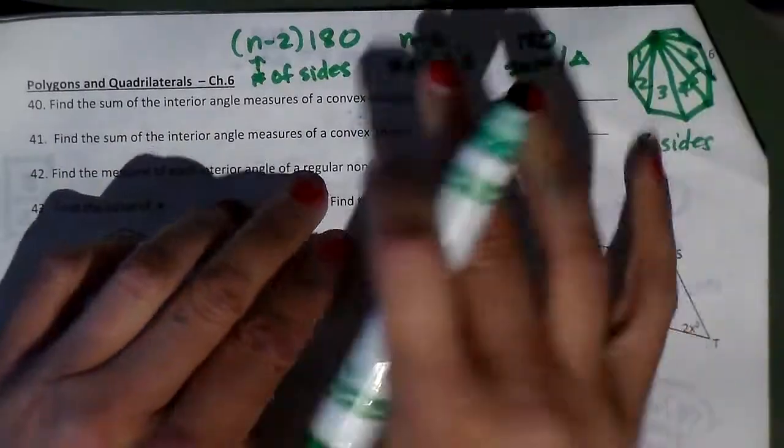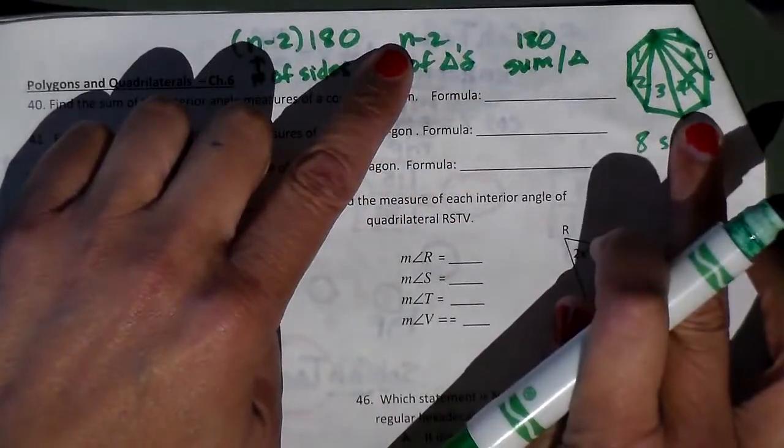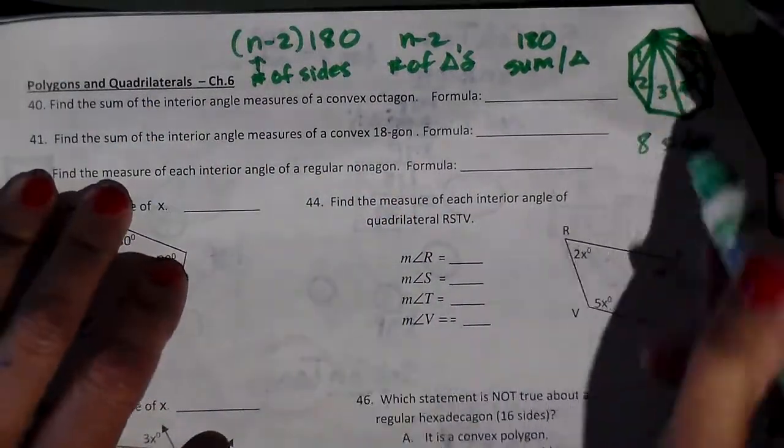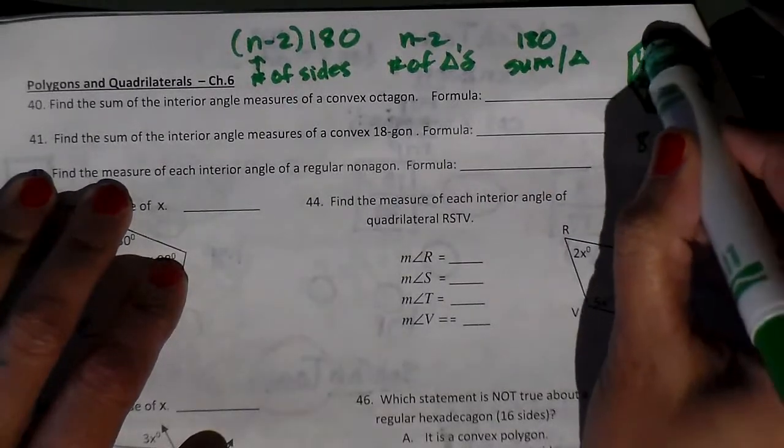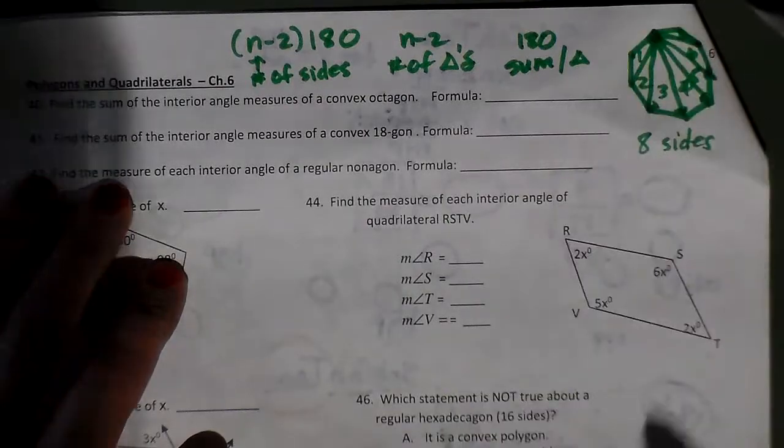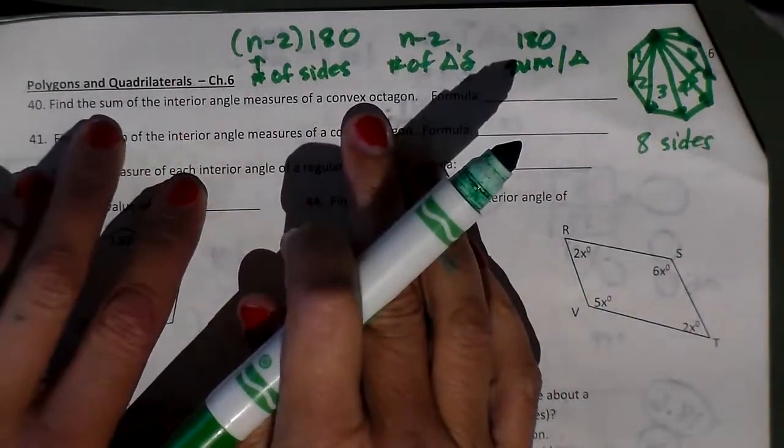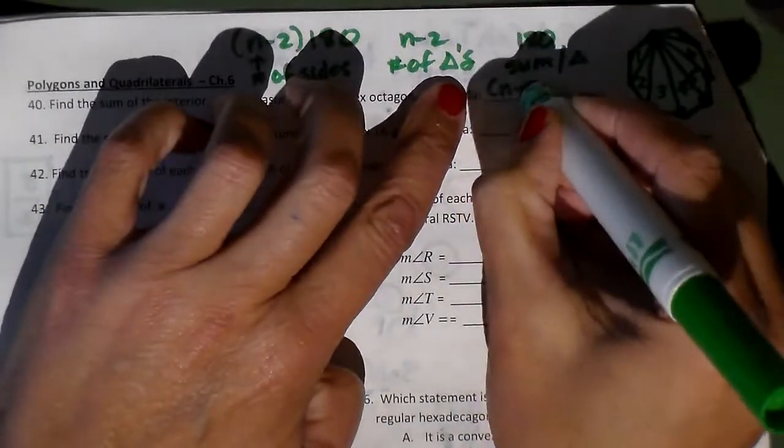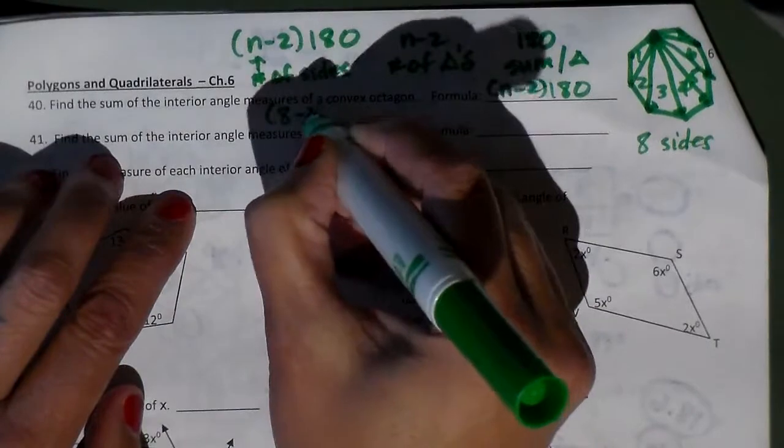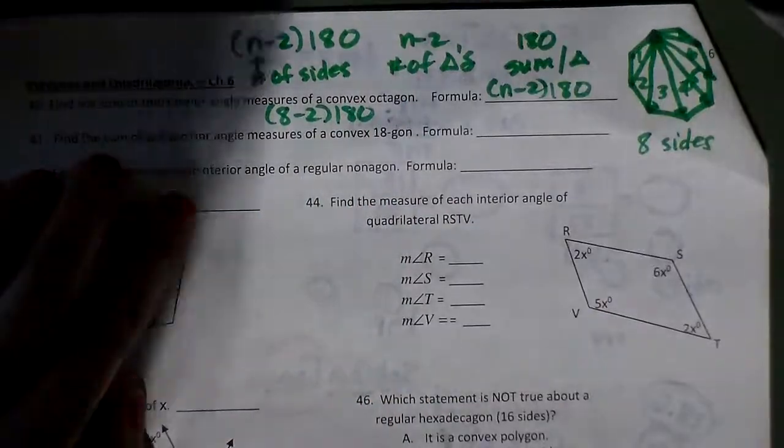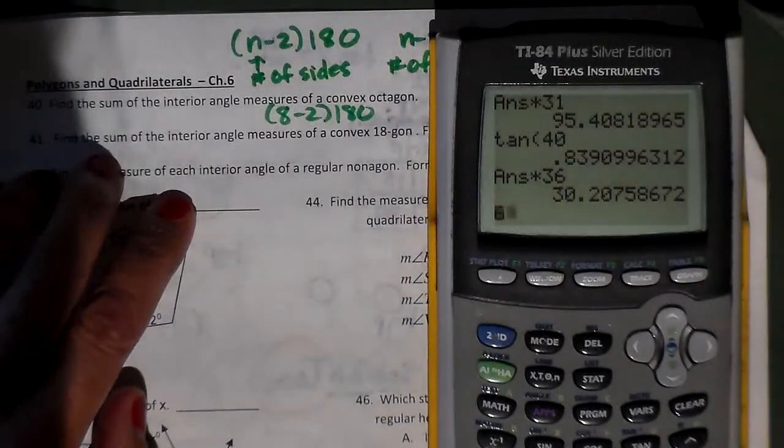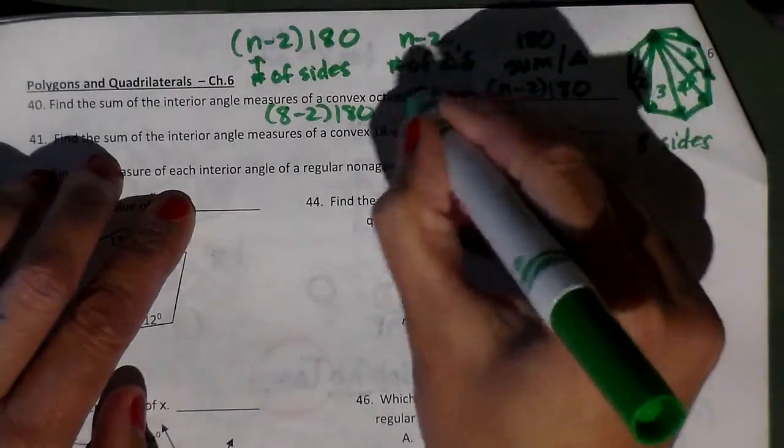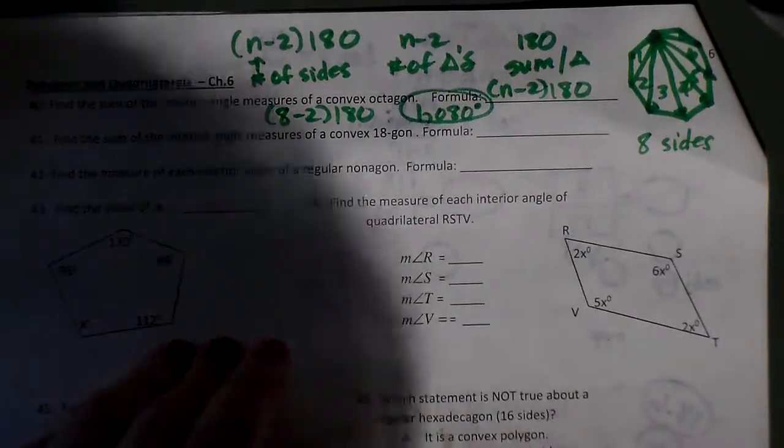Hence, the n minus 2. 8 sides, 6 triangles, that's the n minus 2. How many degrees angle sum wise does each triangle have? 180. Do you notice how all the triangles hit all the vertices? None of the angles of the triangles are inside the figure, they're all a part of the figure. So to find the sum of the interior angle measures of a convex octagon, the formula is n minus 2 times 180. So for the octagon, we have 8 minus 2 times 180, which is 6 times 180, which is 1080 degrees.